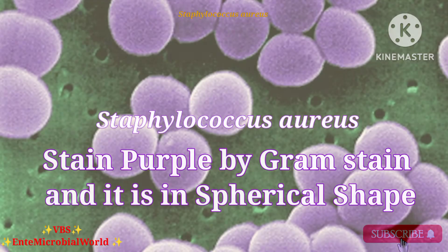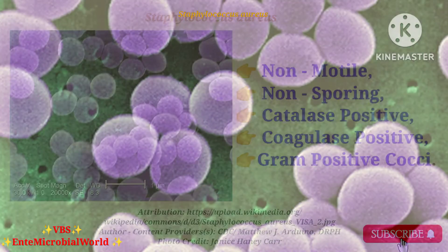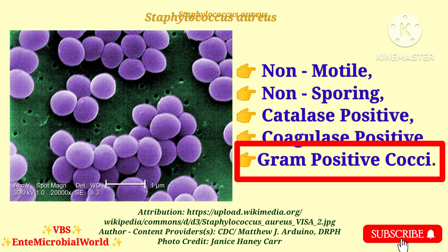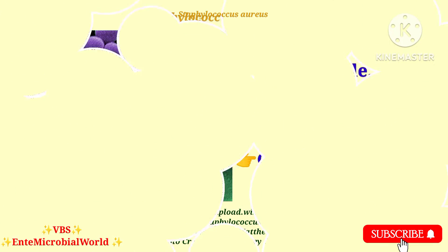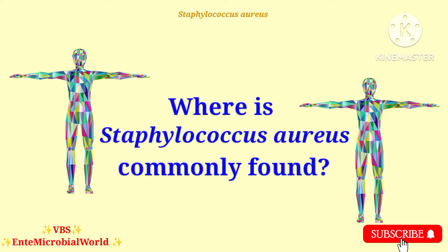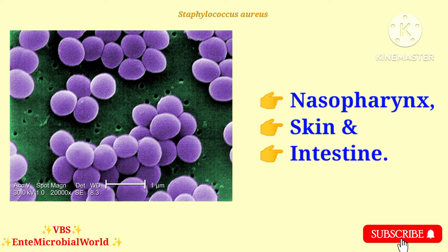Staphylococcus aureus stains purple by gram stain and it is in spherical shape, so we are calling it a gram positive cocci. Staphylococcus aureus is commonly found in the nasopharynx, on normal skin and in the intestines.